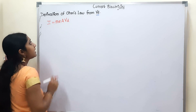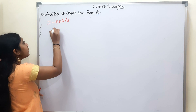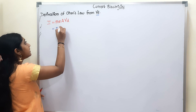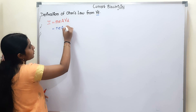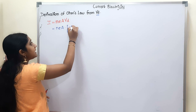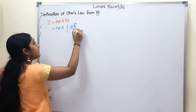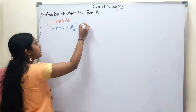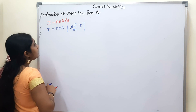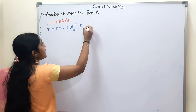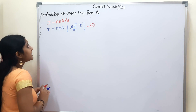The formula is I = n·e·A·Vd. We will substitute this formula. Vd is equal to minus eE by m into tau. This gives us the current formula — this is equation number 1.